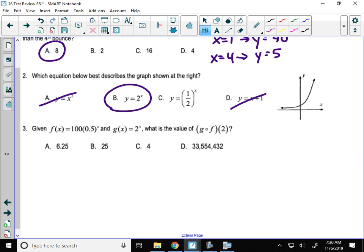Number 3, we know that f(x) is 100 times 0.5 to the x, and g is 2 to the x. What's g(f(2))? Some composition of functions here. Remember, we always start on the right, f of 2.